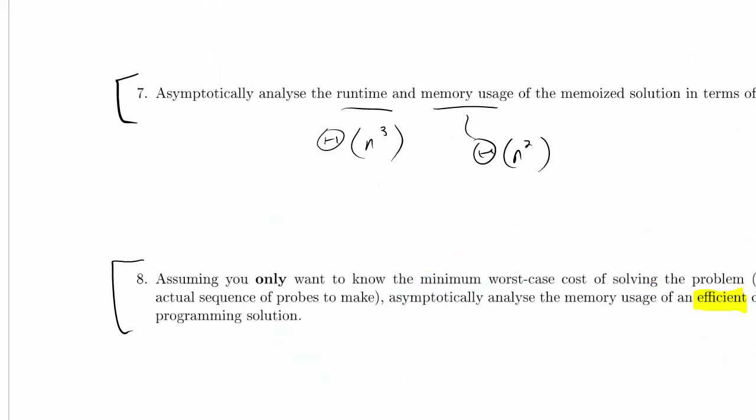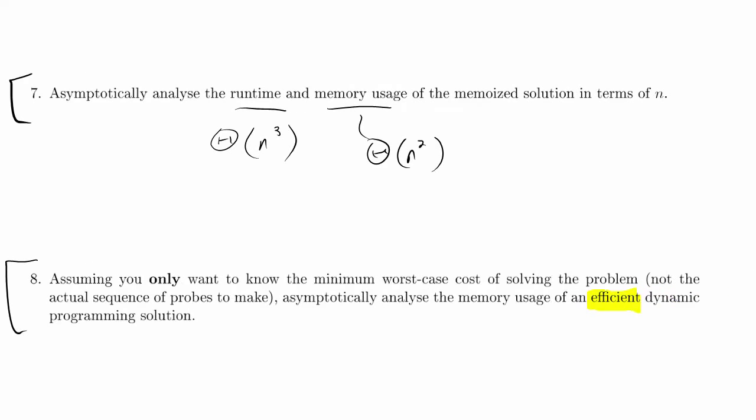So that's if we have to actually extract the pattern of probes. That's not what we're talking about. We're talking about how much does it cost just to get the minimum worst case cost of solving the problem. So just to fill in that table. And with the analysis we did earlier, I can actually say right away, because the dynamic programming approach is doing the same thing as the memoized approach, I can say right away that the time it takes is still n cubed. So runtime, didn't ask for that, but runtime is still n cubed. What about memory usage? Well, I'm still using the whole table. I'm not throwing away any of the table. There's no sliding window. So my solution is n squared.